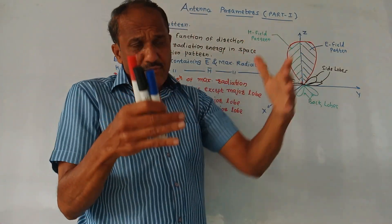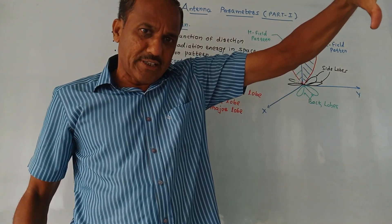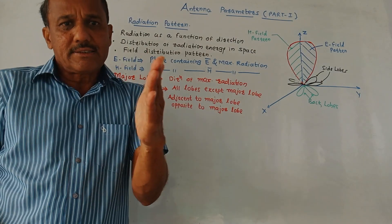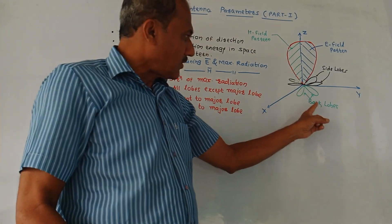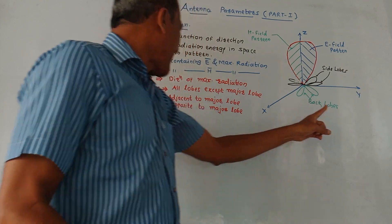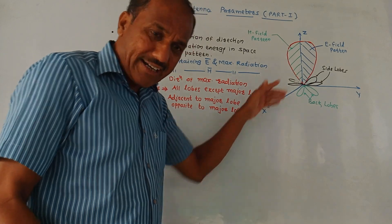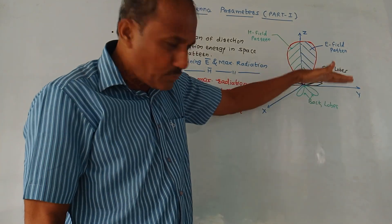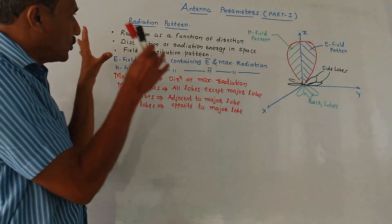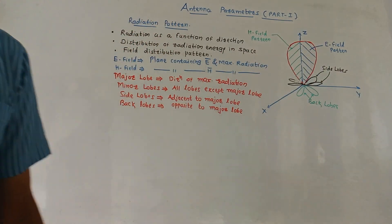If the antenna is oriented in a particular direction giving maximum radiation, it may happen that from the back end of the antenna some radiation is generated — these are called back lobes. Back lobes are opposite to the Major Lobe and they occupy the hemisphere in the opposite direction to that of the Major Lobe. These are the radiation patterns of an antenna.